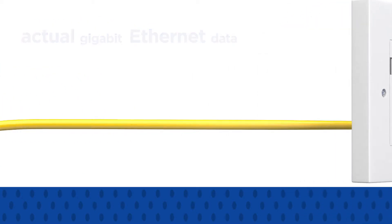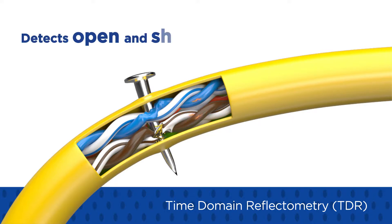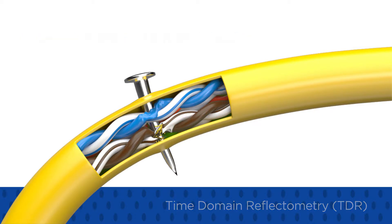SignalTex CT also uses Time Domain Reflectometry, or TDR, that helps locate common wiring faults such as open and short circuits, which are a common cause of network downtime and slow transmission speeds.